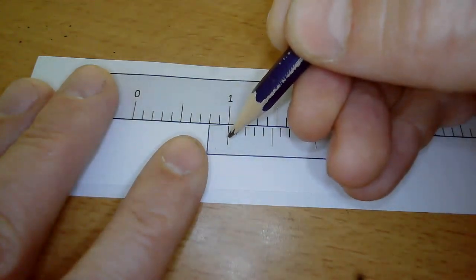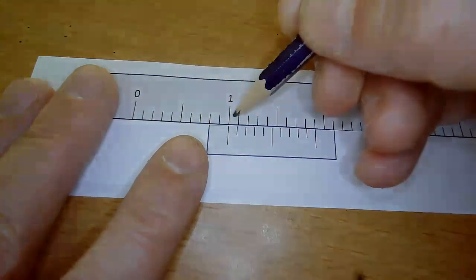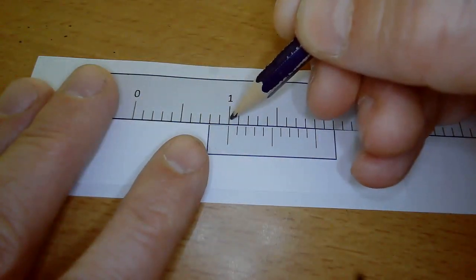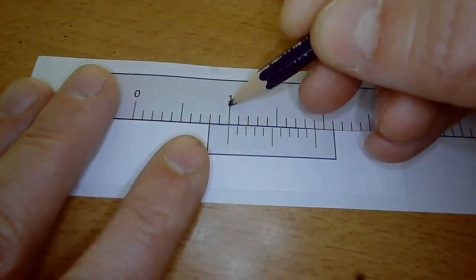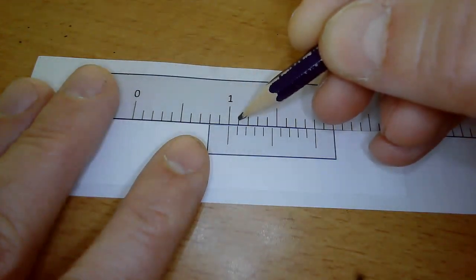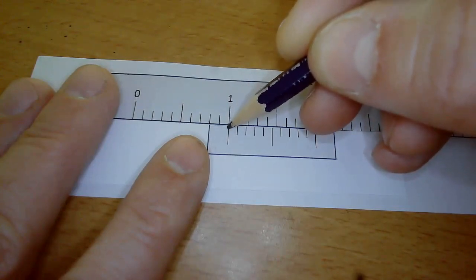In this example, it's 1.0 centimeters because it hasn't reached the first millimeter and it lines up exactly, so it's 1.0 and then zero for the next decimal place.